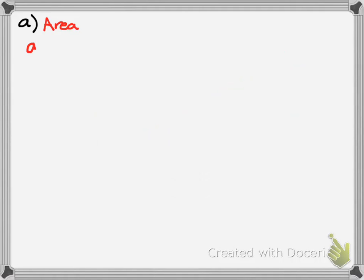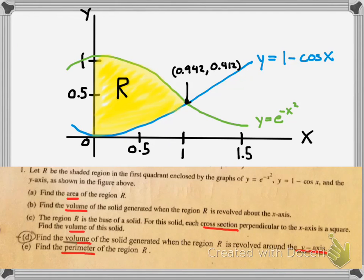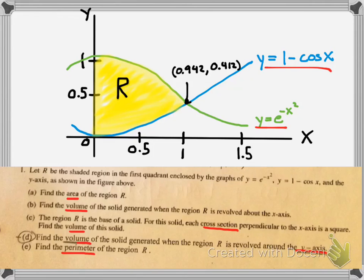Moving on to finding the area: since we found the x-coordinate of the intersection point, we're going to integrate with respect to x. I usually define that x-coordinate as a letter — I'll use A — and box it. On the AP test, you want to define your value. So instead of writing 0 to 0.942, you can write 0 to A. Knowing how to find area between two curves, you take the top function minus the bottom function and integrate from 0 to A.